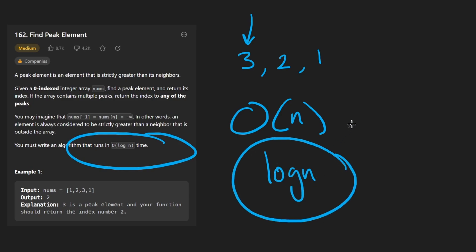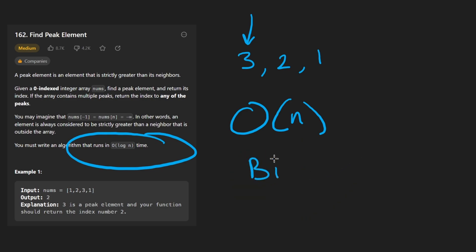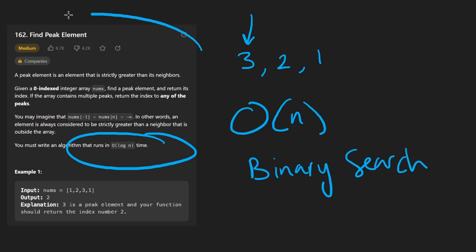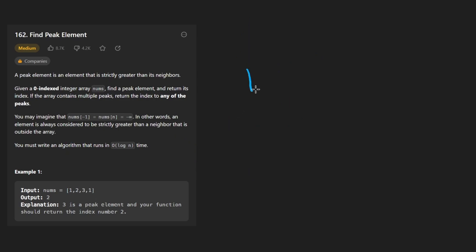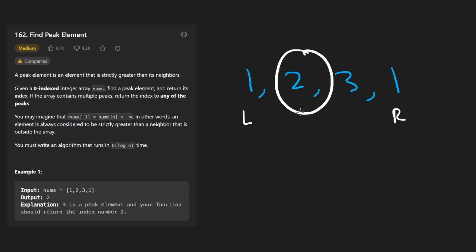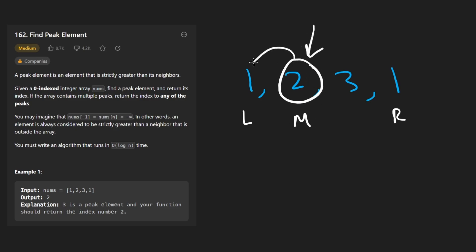Are there any algorithms you can think of that are O(log n) time? Pretty much the only one that would work here is binary search. Let's go back to basics — we have an array like 1, 2, 3, 1 with a left and right pointer. We calculate the midway point and check: is this a peak element? We compare it to its left neighbor — it's greater. We compare to its right neighbor — it's not greater. So we know for sure this is not a peak element.